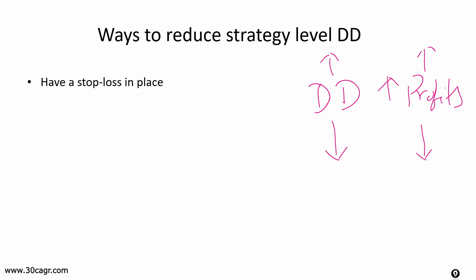The first way to reduce strategy-level drawdown is to have a stop loss in place. Without a stop loss, your stocks might bleed when markets move violently. The second and most important is position sizing — the size of your position decides your drawdown. It's always recommended to have small positions so losses and drawdowns are less. It is recommended to risk around 2% of your capital per position but not more than that.